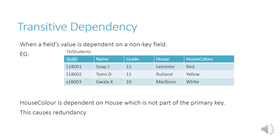In our example here, this is a table of students. We've got the student ID, name, grade, house, and house color. You can see that house color is dependent on house, not on the student, name, grade, or anything else. And house is not part of the primary key. So this is a transitive dependency and it causes redundancy.